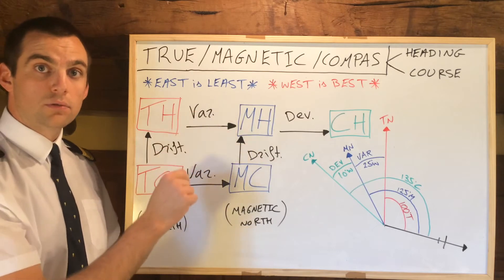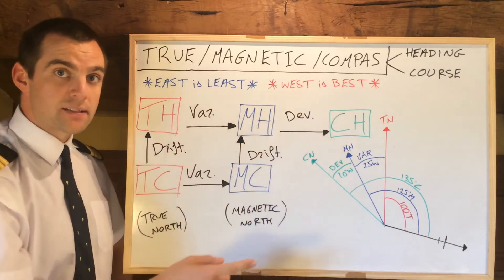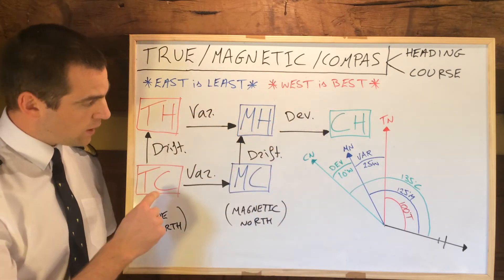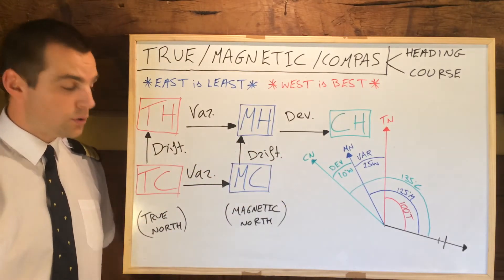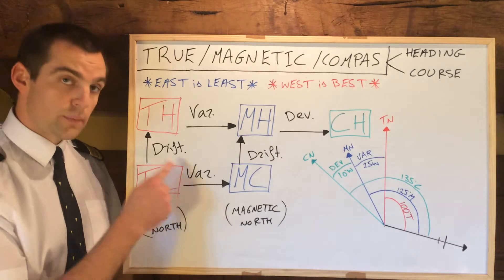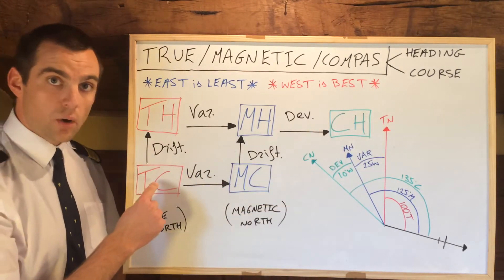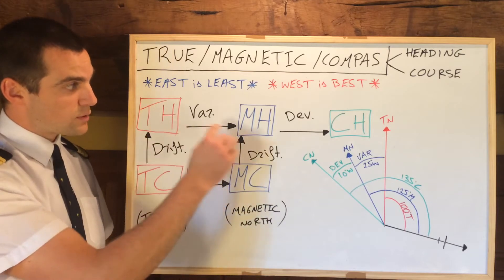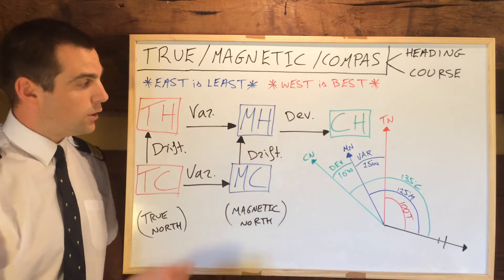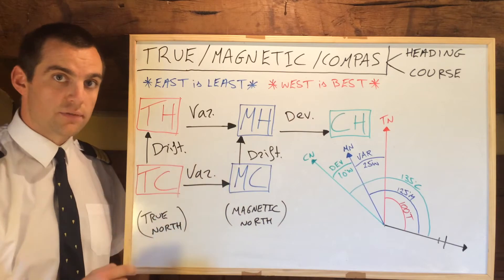You may have heard these rules: east is least, west is best. They only work in the direction of the arrows — very important to remember that. We'll do the biggest, most complicated example, which would be going from a true course to a compass heading. You can go either way. A couple of terms we need to know are variation, deviation, and drift.